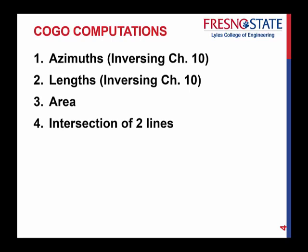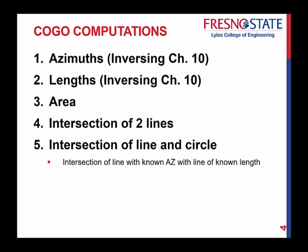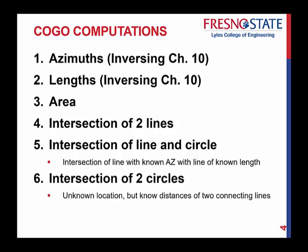We can compute the intersection of two lines, the intersection of a line and a circle. That's an intersection of a line with known azimuth with a line of known length. That's when you're dealing with the intersection of a line and a circle. Intersection of two circles. Unknown location, but known distances of two connecting lines.